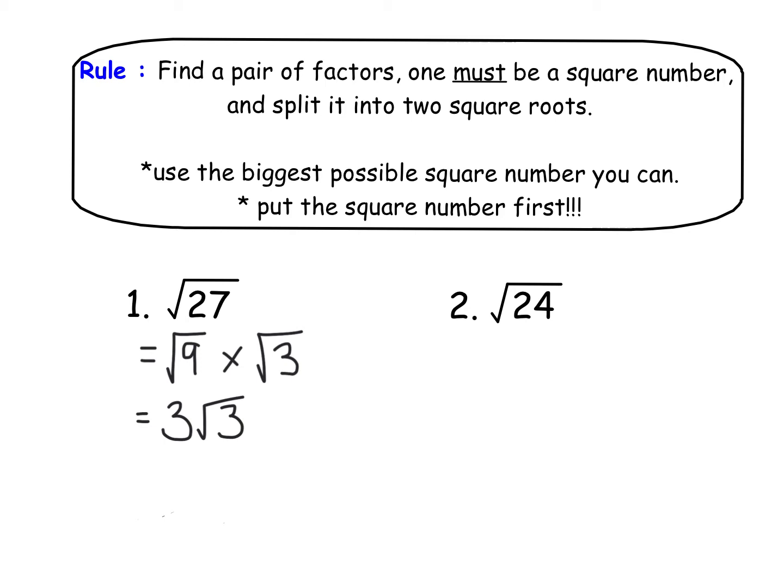Now let's look at example 2. There are lots of numbers that go into 24. You have got 2 and 12, 3 and 8, 6 and 4, 24 and 1. You have to find the pair that has a square number in it. So I wouldn't use 12 and 2 because neither of them are square numbers. I wouldn't use 3 and 8, but I'm going to use the 4 and the 6.